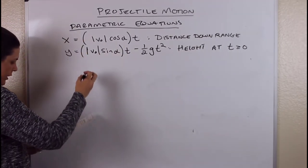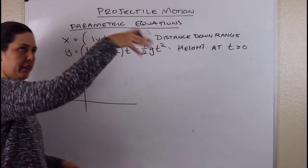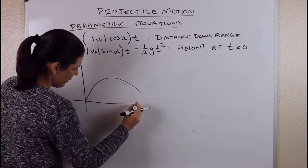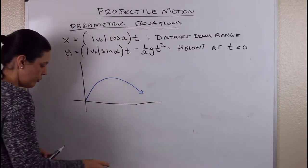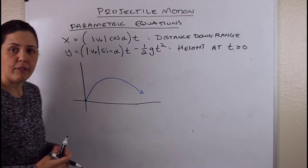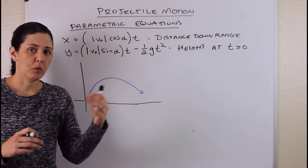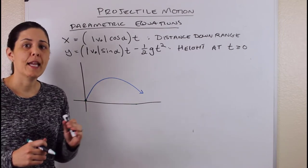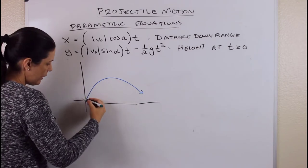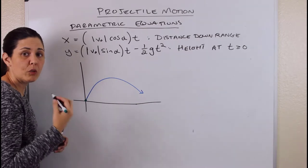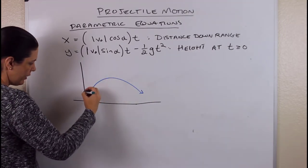Let me draw a picture. Here's an x-y coordinate system, and the projectile path goes something like this — up and then back down. v naught is the initial velocity right at the starting point. If velocity is the derivative of position, derivatives give you the slope or rate of change at that point — it's tangent to the curve. So the initial velocity is tangent to my curve and always points in the direction of motion.